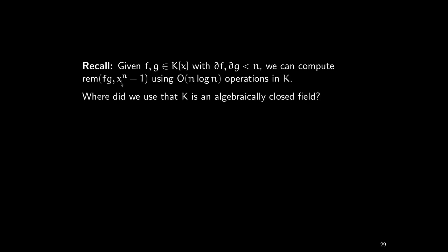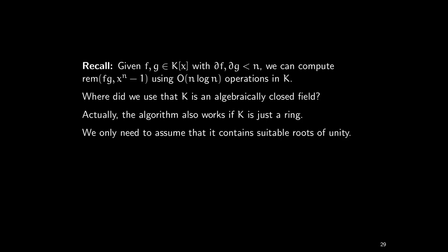There was a lemma last time stating that the roots of x^n minus 1 are exactly the powers of omega when omega is a primitive nth root of unity. So the algorithm from last time works if k is just a ring, provided the ring contains suitable roots of unity — which may or may not be the case. So we have to ask: what do we do if there are no roots of unity?